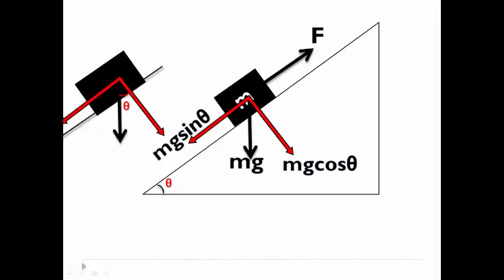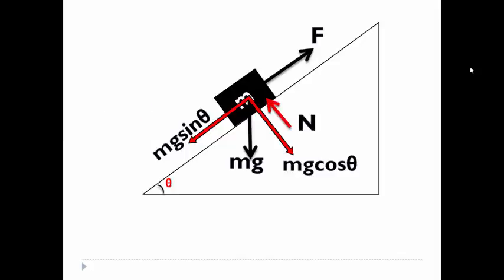Now the other forces, normal reaction capital N, will act perpendicular to the given surface. Then we choose the axis x and y such that it coincides with our direction of acceleration. The final step is to solve the system.